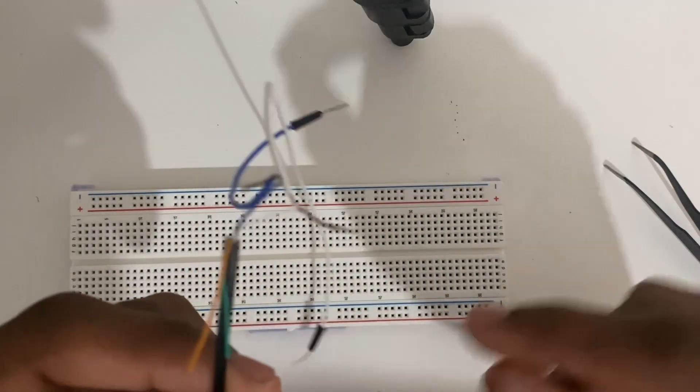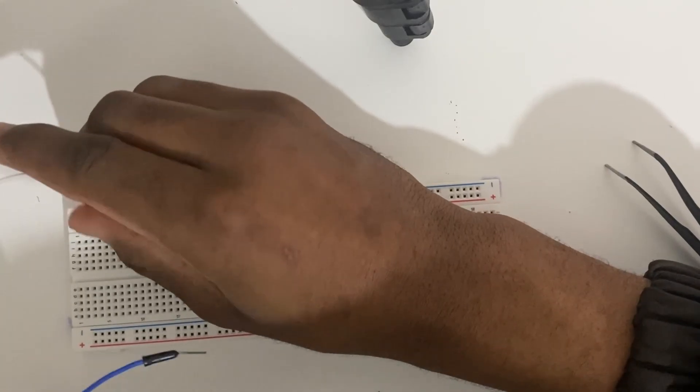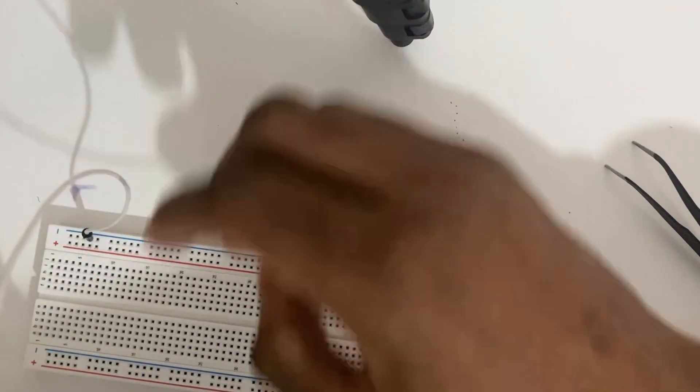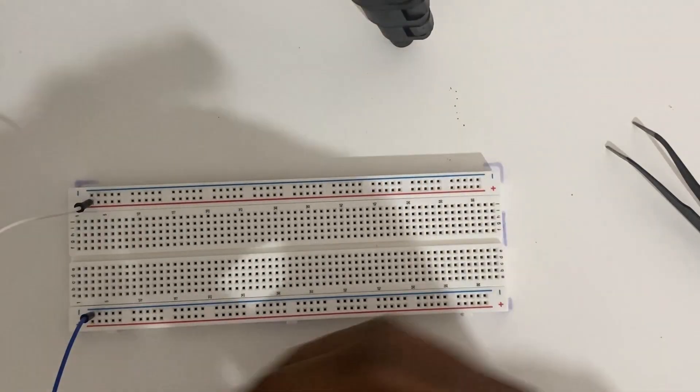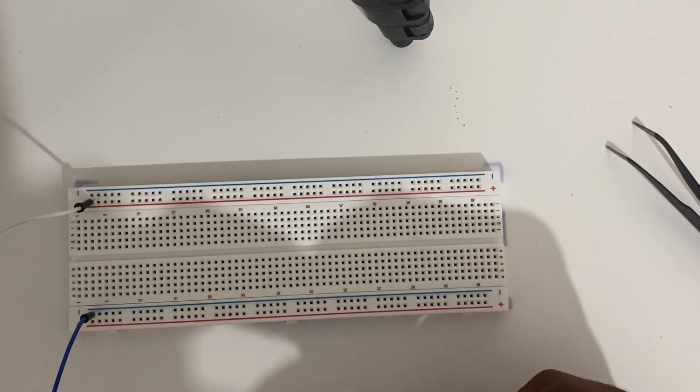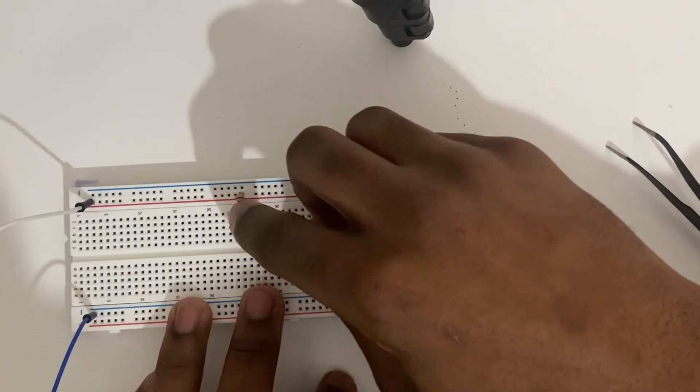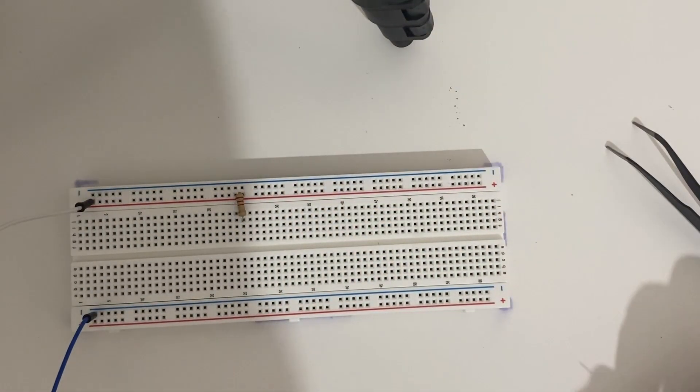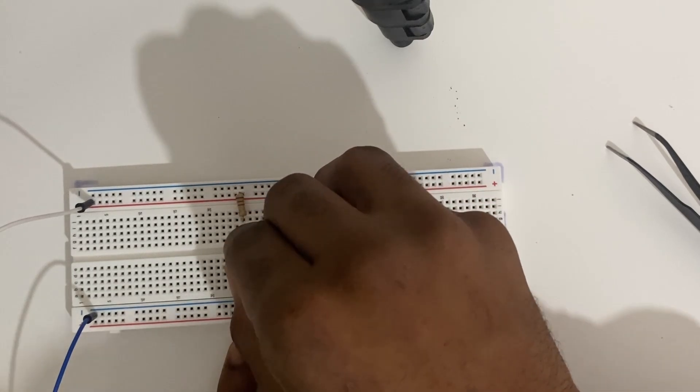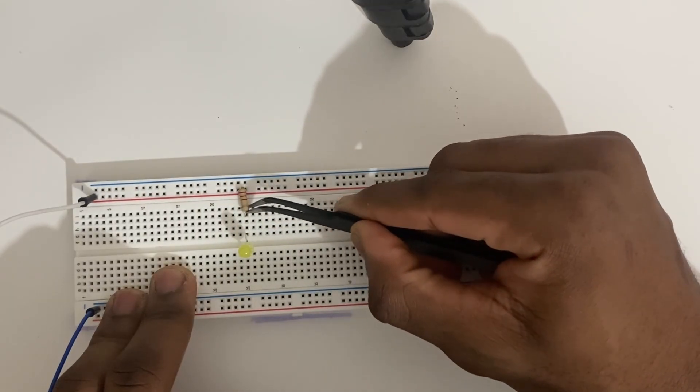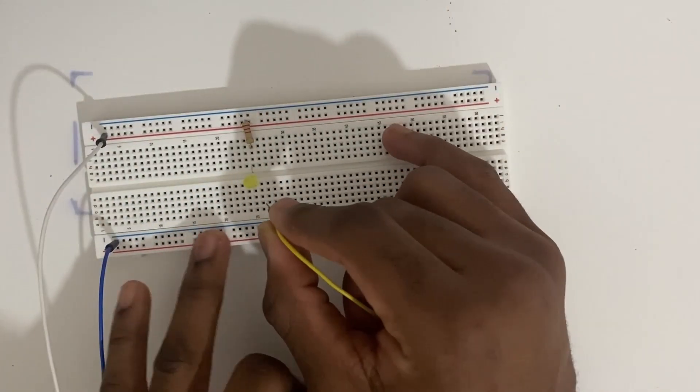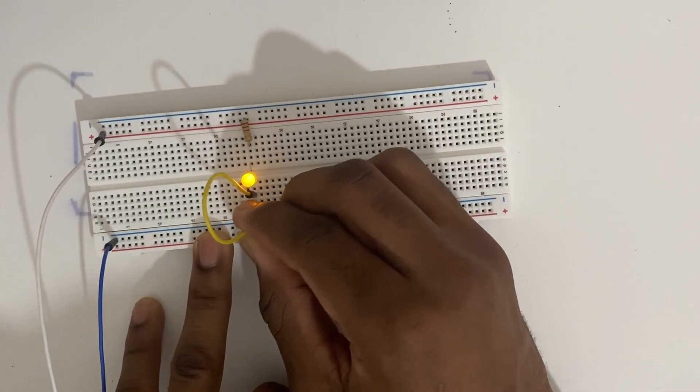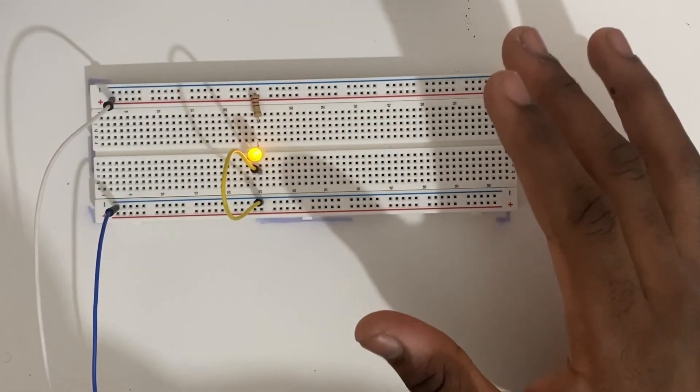I'm using this cell phone charger to provide the power to the board. It's actually a cut-up mouse, but both would work. Just don't use a laptop charger. Now you never want to connect anything directly to power. That's just going to fry all your components. We need to add a resistor which will safely give the power to the rest of our components. Now I'll hook up an LED here, making sure the longer leg is connected to the resistor. And you want to complete the circuit by giving it a path to ground. And that's all you need to know for the circuit basics.